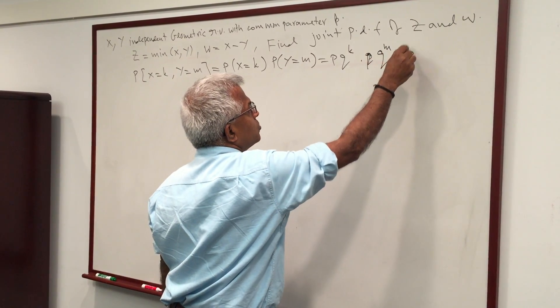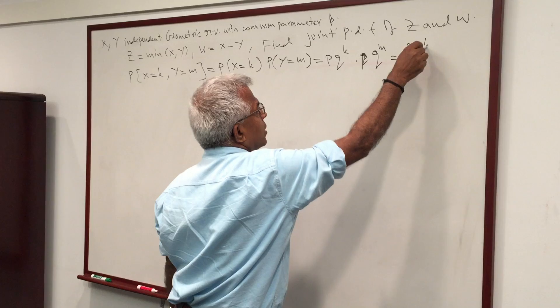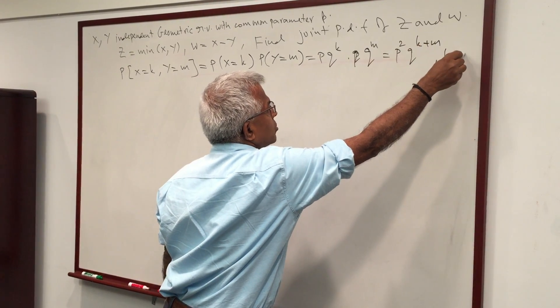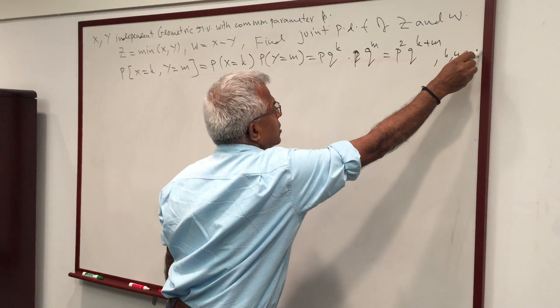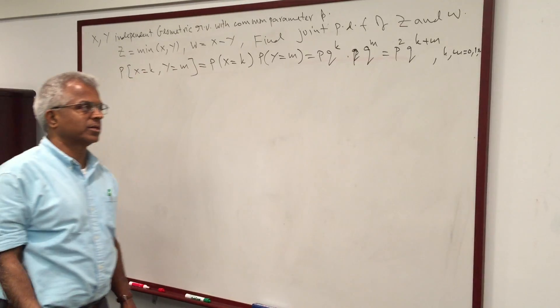So the joint probability is P squared Q to the power K plus M, where K and M both go from 0, 1, 2, 3, etc. That's independent geometry — that's the setup of the problem.